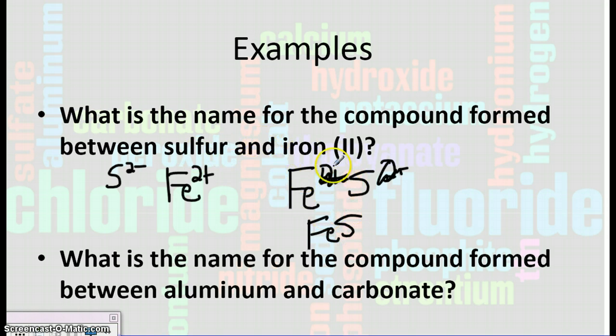As for the naming, we have iron. It's in the middle, which means it needs a Roman numeral. And it told us already in this problem that it was 2. So we're going to put Roman numeral 2, so iron (II). And then the ending is sulfur, and we're going to change the -er to -ide. So we're going to put sulfide.